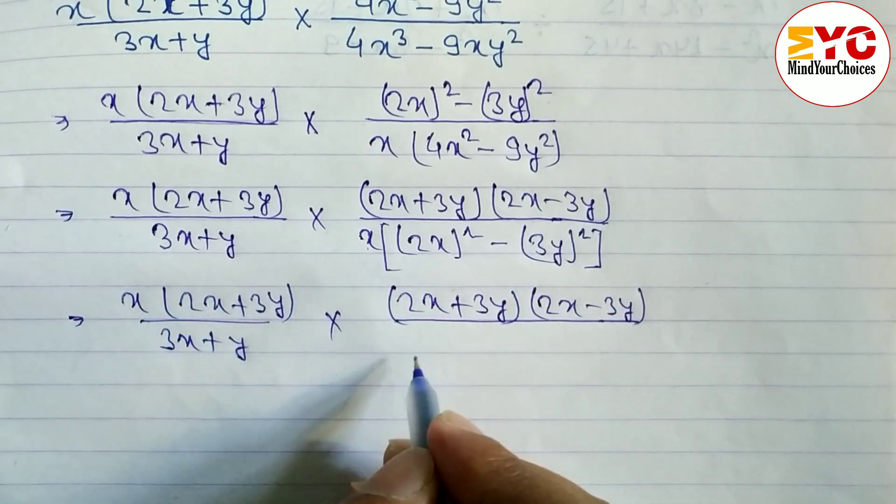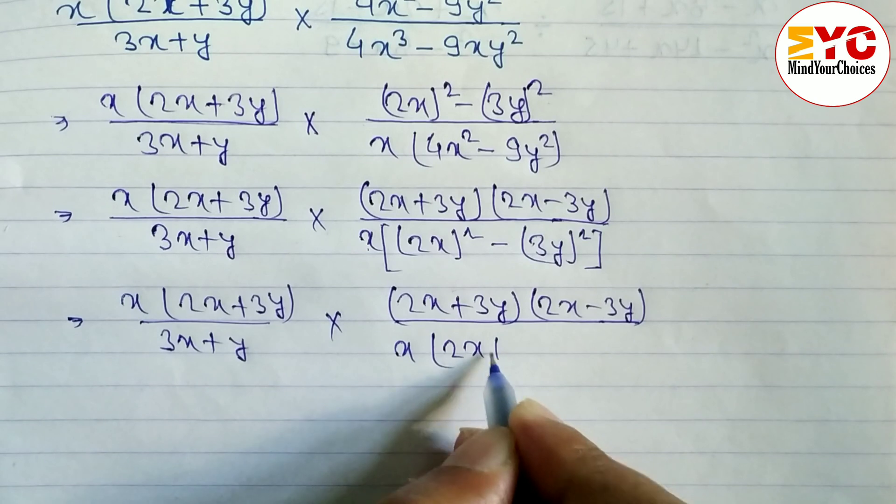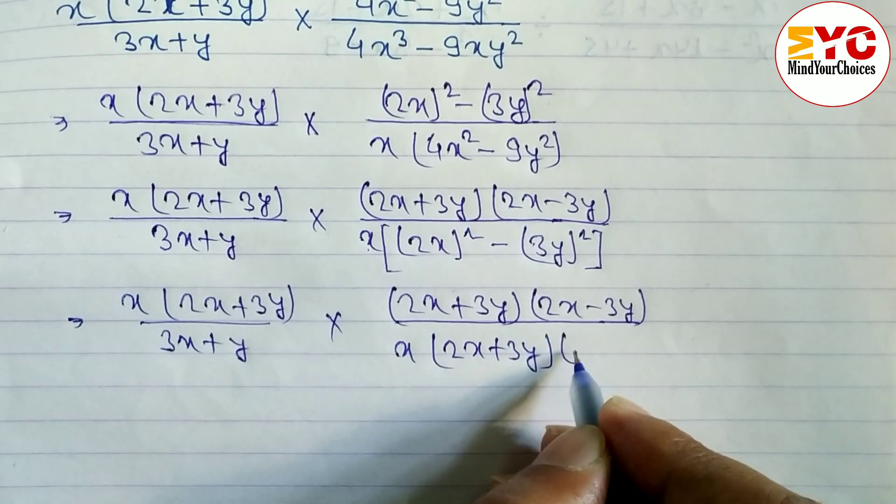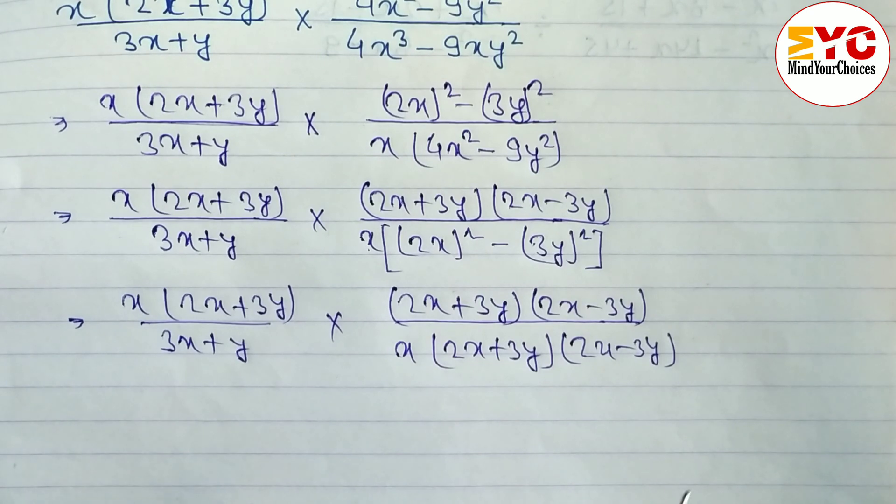So x, this is in the form of a squared minus b squared. We have to use 2x plus 3y, a plus b, and a minus b, 2x minus 3y, a minus b.